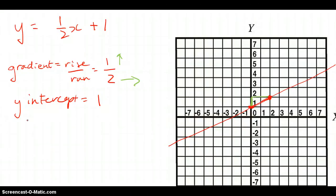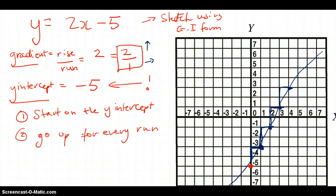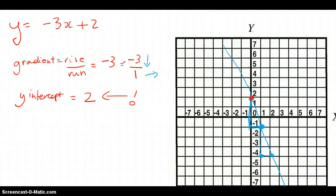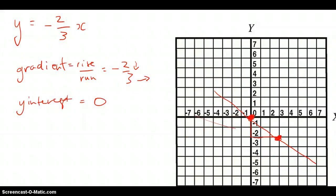Let's recap the key points from all our previous questions. First, work out the gradient. Then, work out the y-intercept. Step 1: start on the y-intercept. Step 2: apply the rise over run — for example, go up 2 for every 1 across; or down 3 for every 1 across; or up 1 for every 2 across; or down 2 for every 3 across. After you have those two points, join them up and extend. It's as simple as that — hopefully this helps!